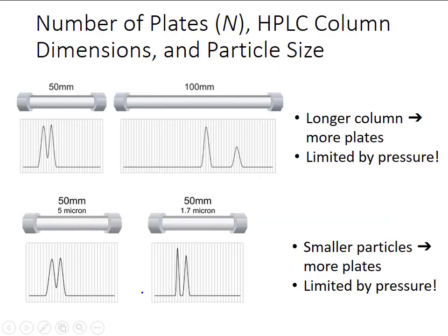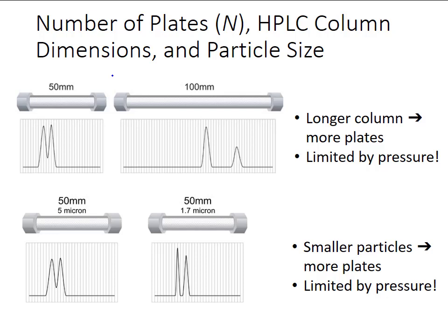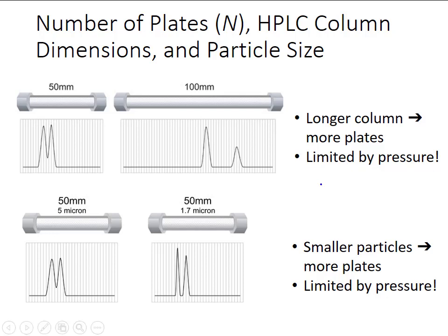In HPLC we can increase the number of theoretical plates by simply making the column longer. We see the resolution of two peaks in a 50 mm column versus a 100 mm column — a longer column leads to more plates and better resolution. But the problem with making a column longer is that we have to push a viscous mobile phase through more stationary phase particles, creating high pressure. The length of an HPLC column is limited by the pressure the instrument can generate; if you exceed that pressure, the plumbing breaks open and mobile phase leaks everywhere.